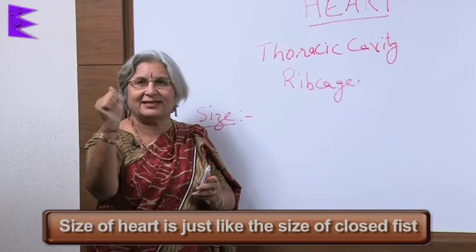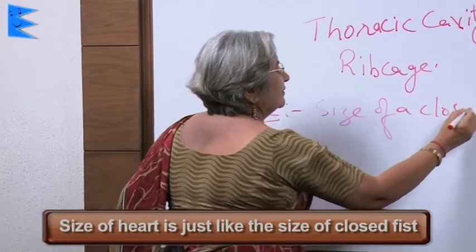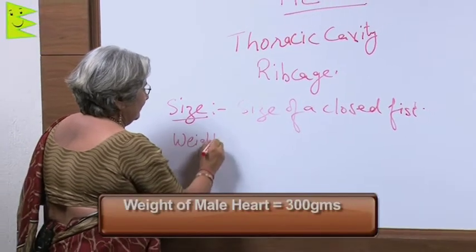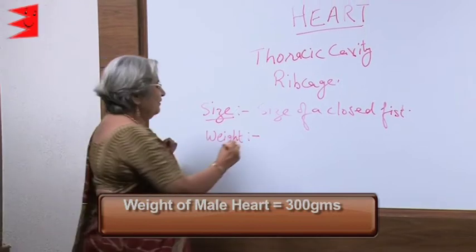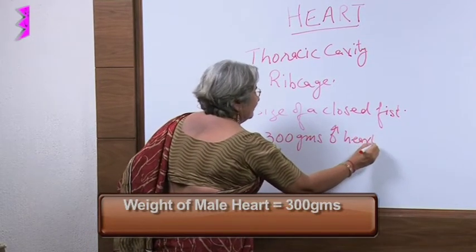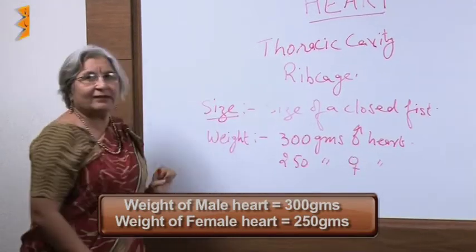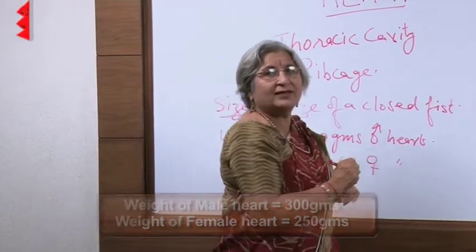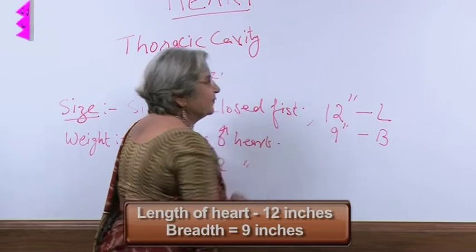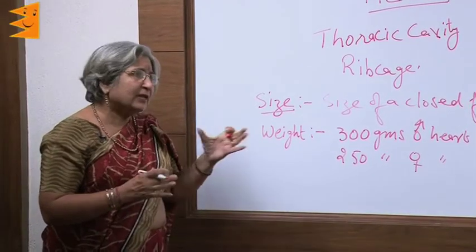The size of a heart is that of a closed fist — only this much. Regarding weight, men have a heavier heart: the weight of a male heart is 300 grams, while that of a female it is 250 grams. The length is 12 inches and the breadth is 9 inches, and of course we all know its color is red.